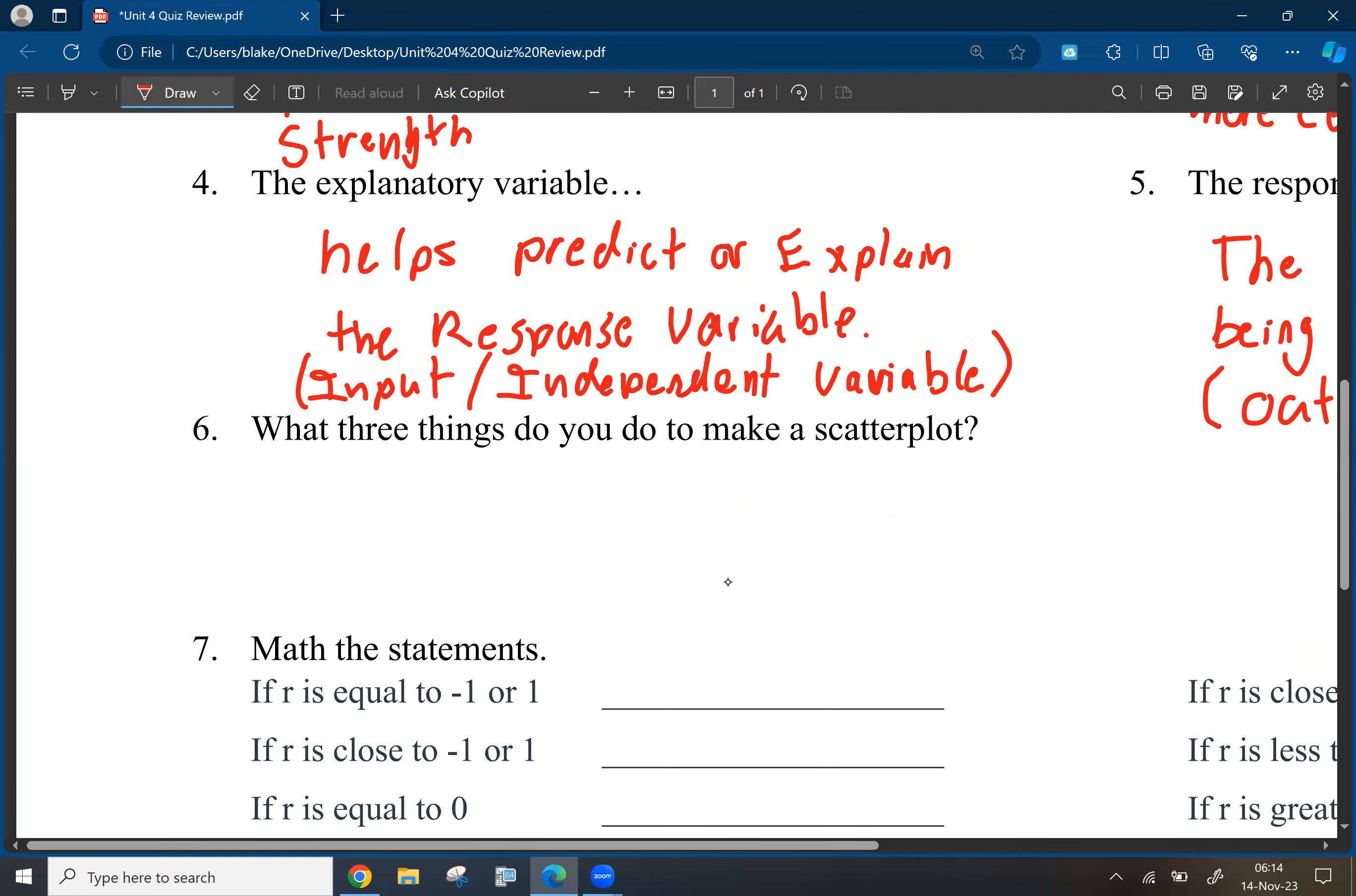There we go. All right, number six, what three things do you need to make a scatterplot? So you need to make sure I get them in order here. I like to put them in order. Identify the variables and label the axis. That's step number one.